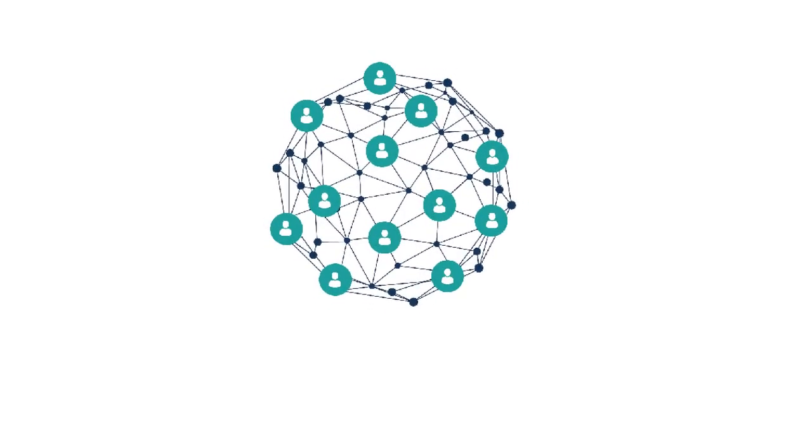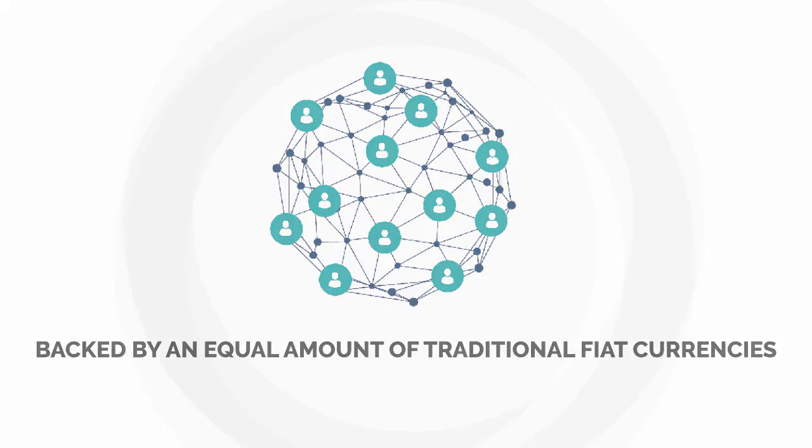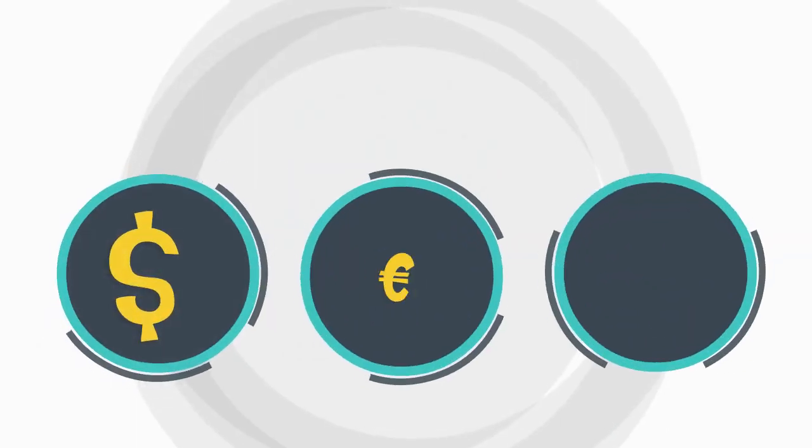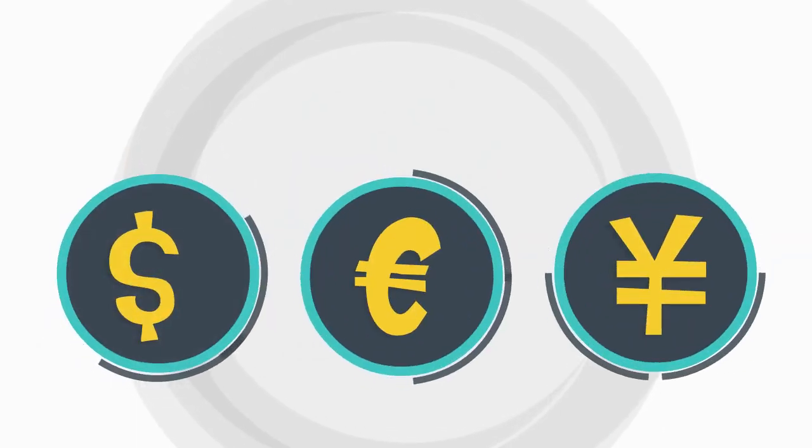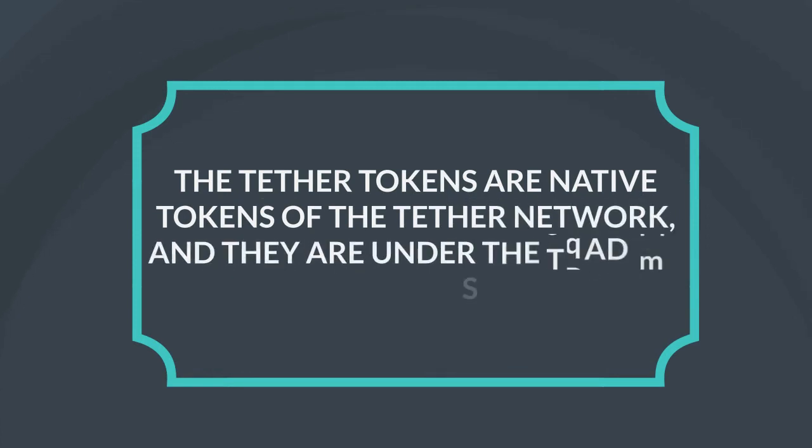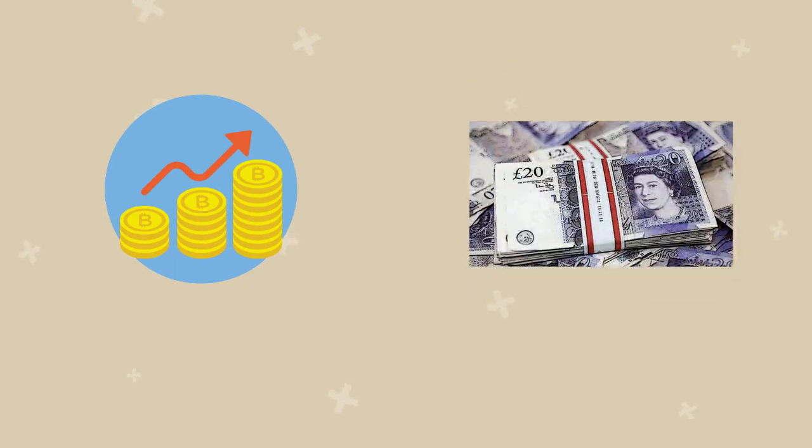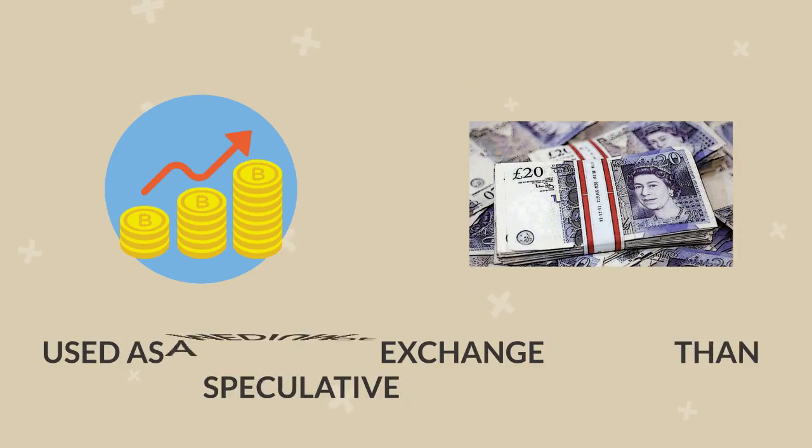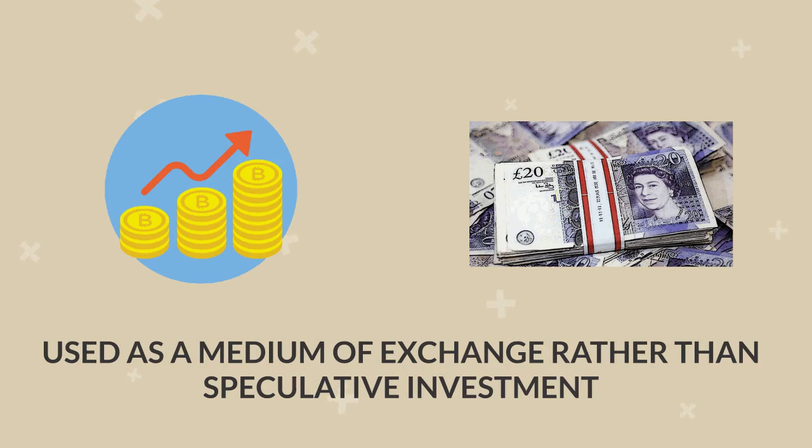Tether is a blockchain-based cryptocurrency in circulation backed by an equal amount of traditional fiat currencies. These include the US Dollar, the Euro, the Japanese Yen, and others stored in a bank account. The Tether tokens are native tokens of the Tether network, and they are under the trading symbol USDT. Every Tether coin is backed by fiat currency, which allows this cryptocurrency to be used as a medium of exchange rather than speculative investment.